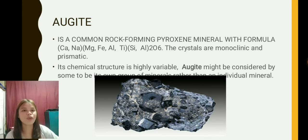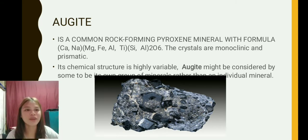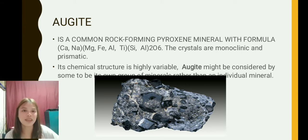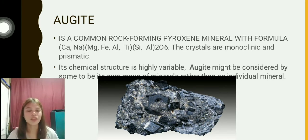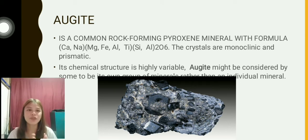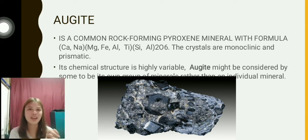Augite is the most common rock-forming pyroxene mineral. Its crystals are monoclinic and prismatic. Its chemical structure is highly variable, and augite might be considered by some to be its own group of minerals rather than an individual mineral. Augite is of interest to geologists and collectors because it helps scientists and geologists understand Earth's history in certain regions. Augite has little to no industrial value.